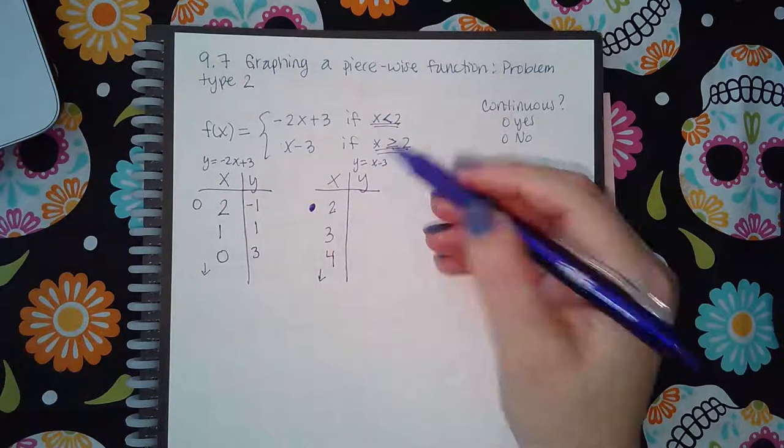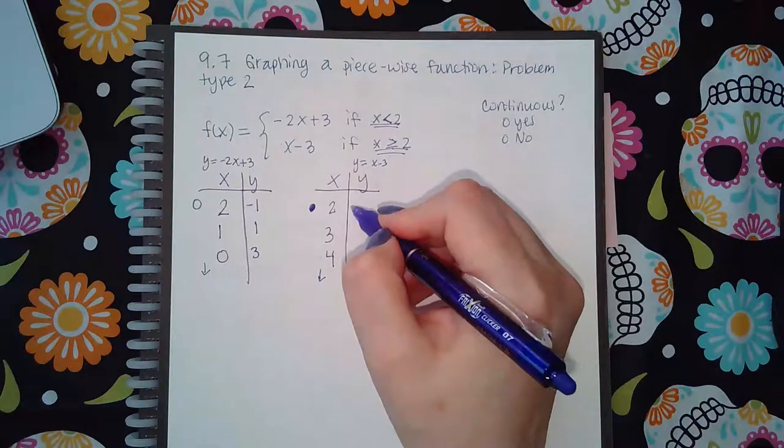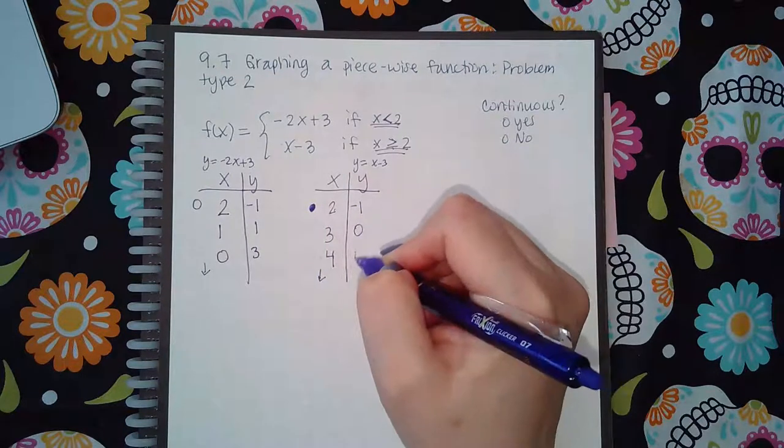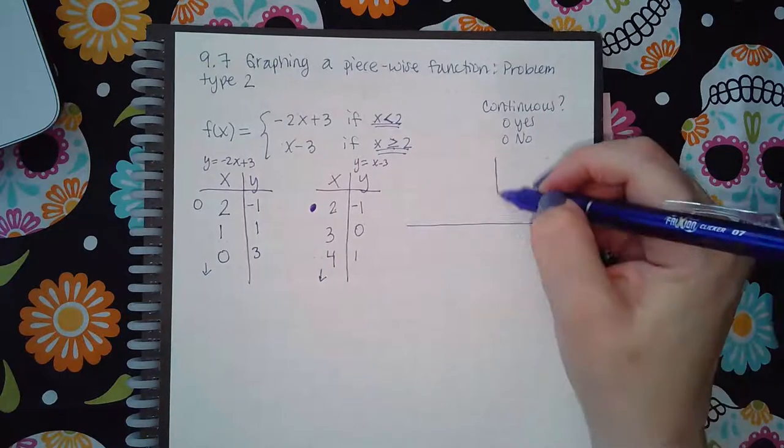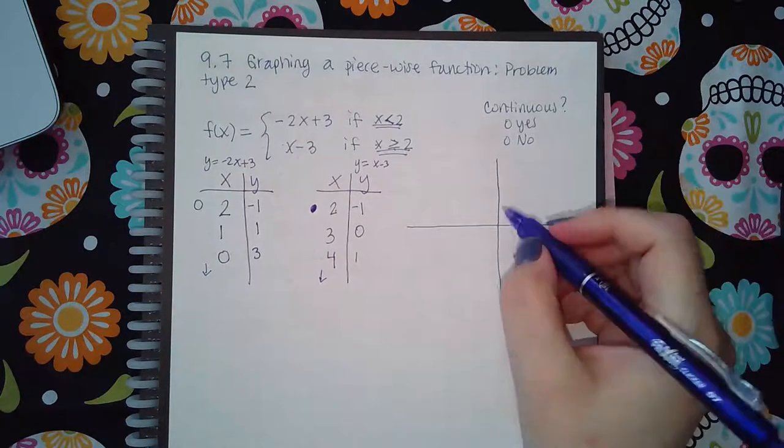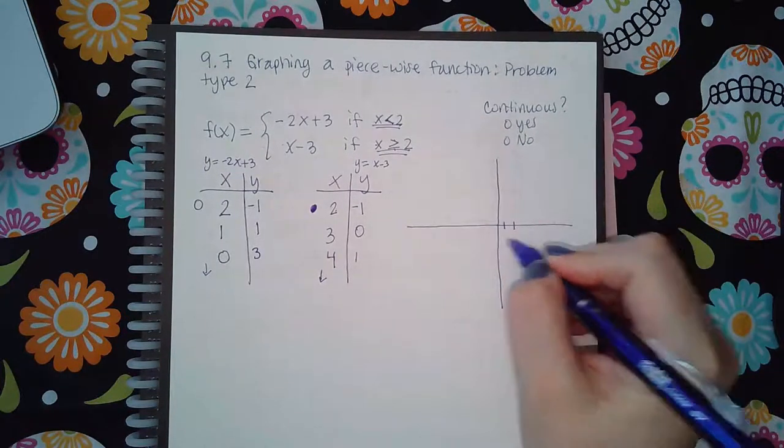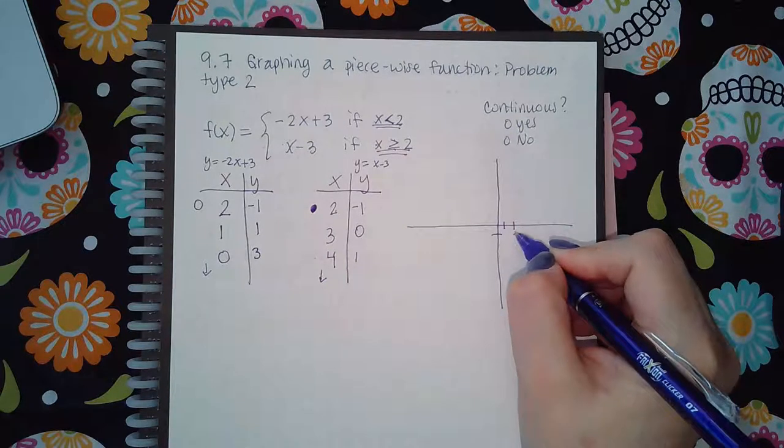If I draw this on a graph, I get 2 and negative 1 with an open circle, 1 and negative 1, and then 0 and positive 3. I'm going to use the arrow after that so the line is going in that direction.